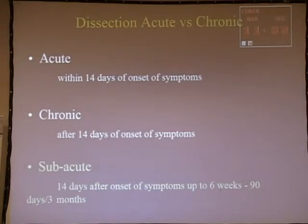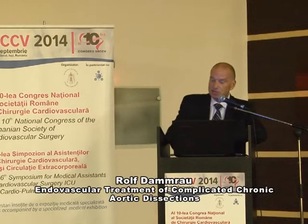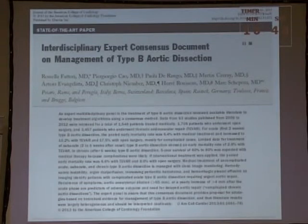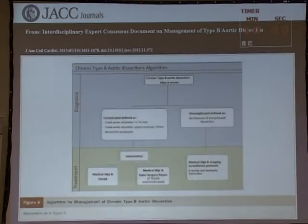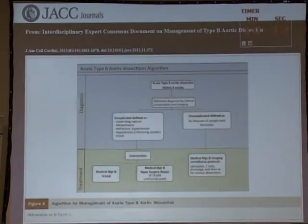From the old definition, acute is within 14 days and after that it is chronic, but now for endovascular treatment there is in the literature a third classification — superacute — which is something between 14 days and up to six weeks or three months. The interdisciplinary consensus on treatment of type B dissection in the acute, superacute, and chronic phases recommends best medical treatment for uncomplicated cases, with surgical or endovascular treatment recommended only for complicated cases.